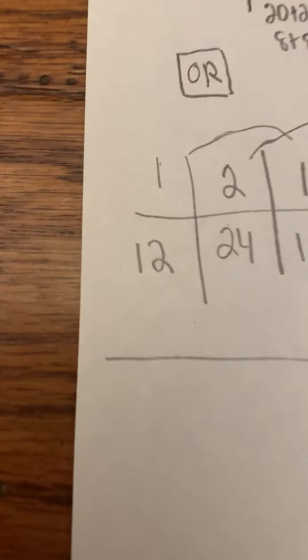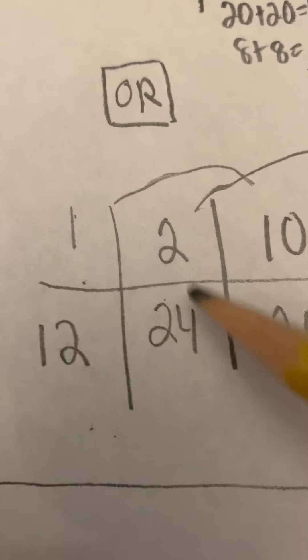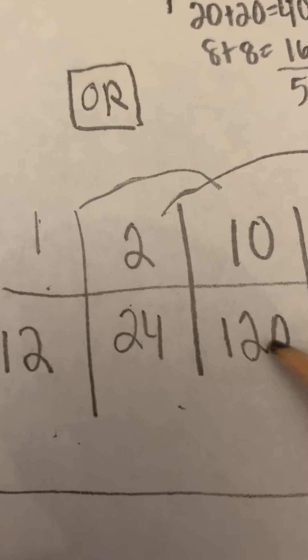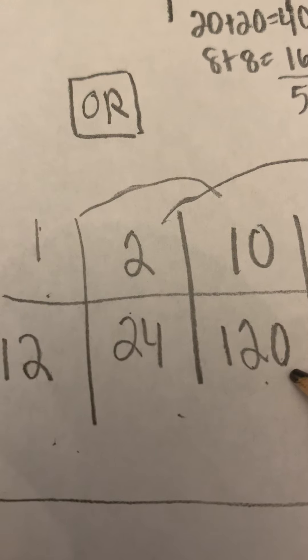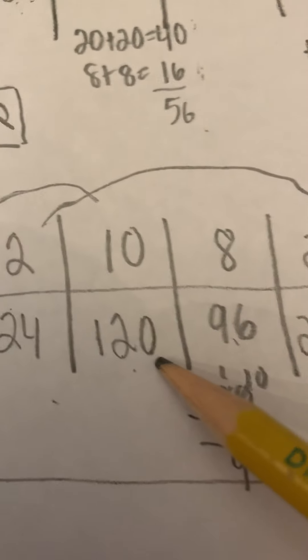Or I could have done the ratio table counting by sets of 12. 1, 12, double 24, times 10, 12, move it over, put the 0 in the 1's place, 128.